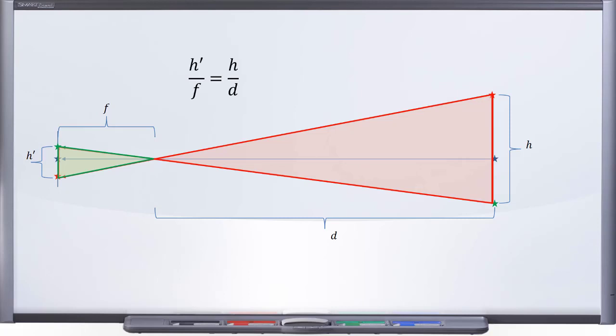So maybe we'd ask the question, how big will our picture of the tree turn out? A quick rearrange shows us that the size of the image on the film is the height of the original tree divided by the distance to the tree multiplied by f. That f says we can zoom the image in and out by moving the film back and forth in the camera.